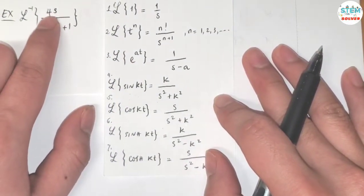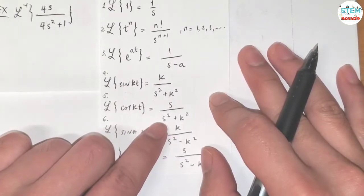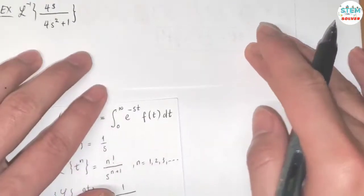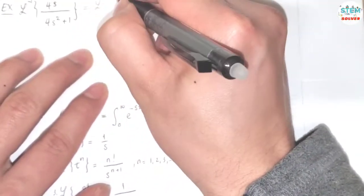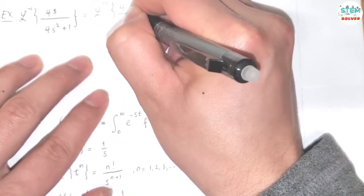Pull out the 4 on top and pull out the 4 on the bottom. Because we need s itself, s squared itself. So let me do that first. Pull out the 4 on top. In the bottom.